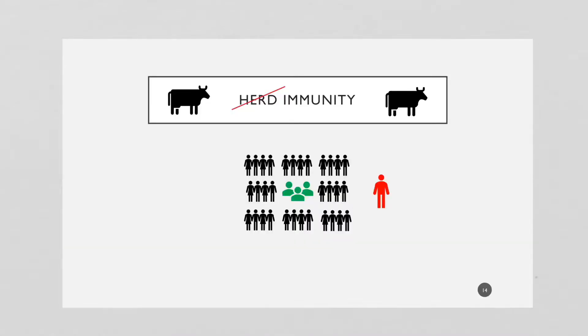Suppose you have a group of people and within this group, there are a few people who are not immune to a disease for whatever reason. Either they didn't get the vaccine or they haven't had the disease itself that grants them immunity. They're just not immune.